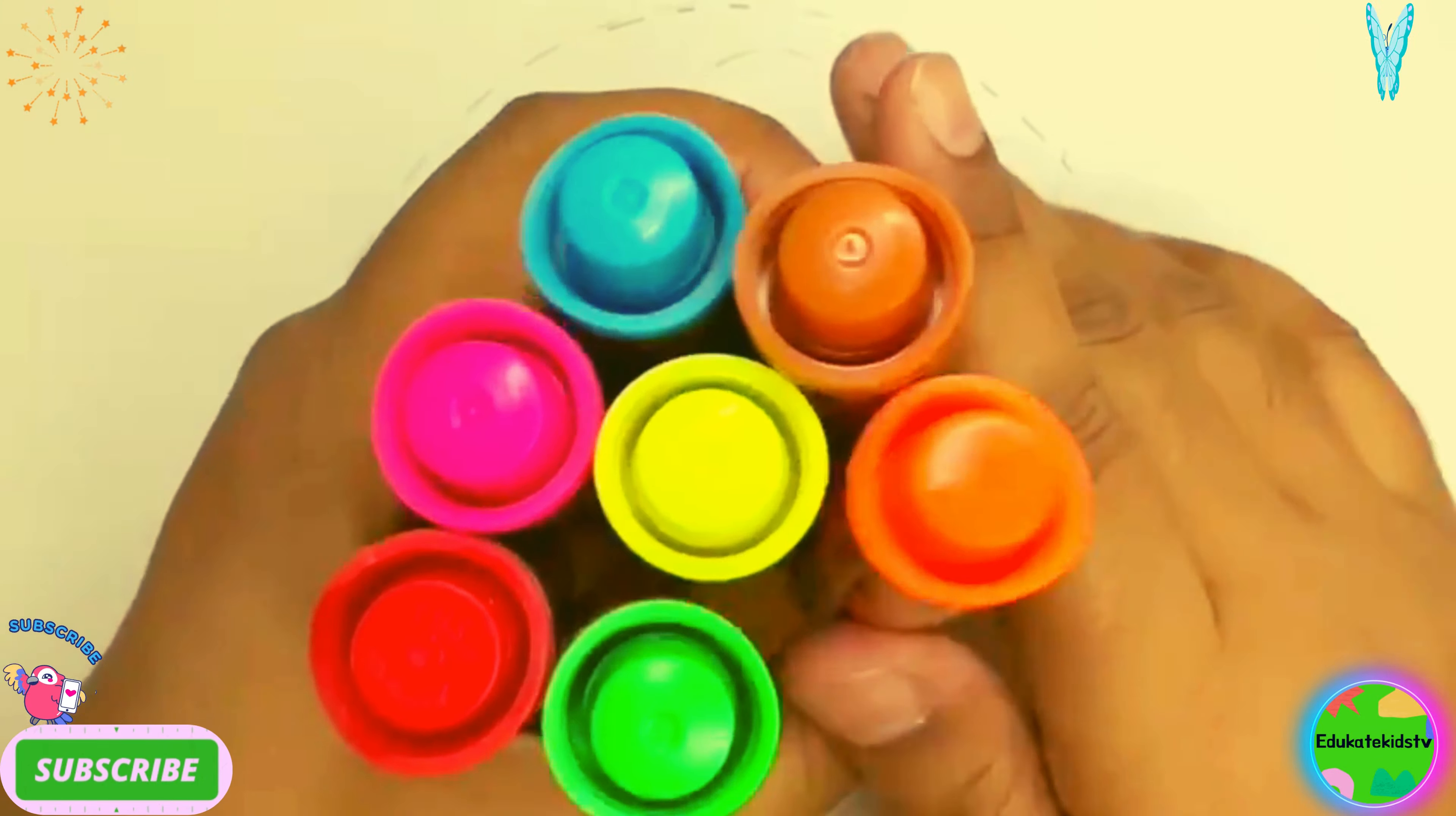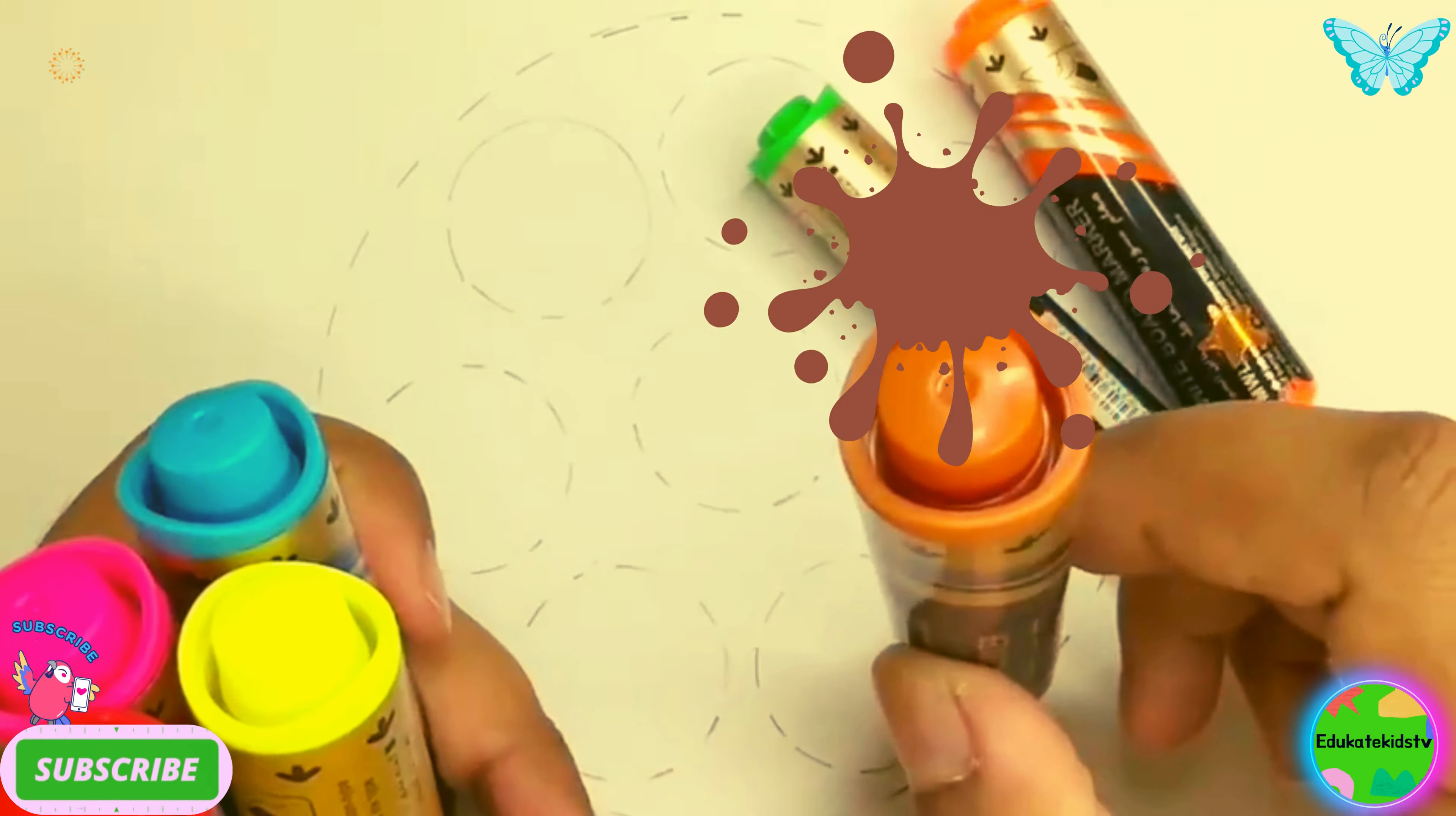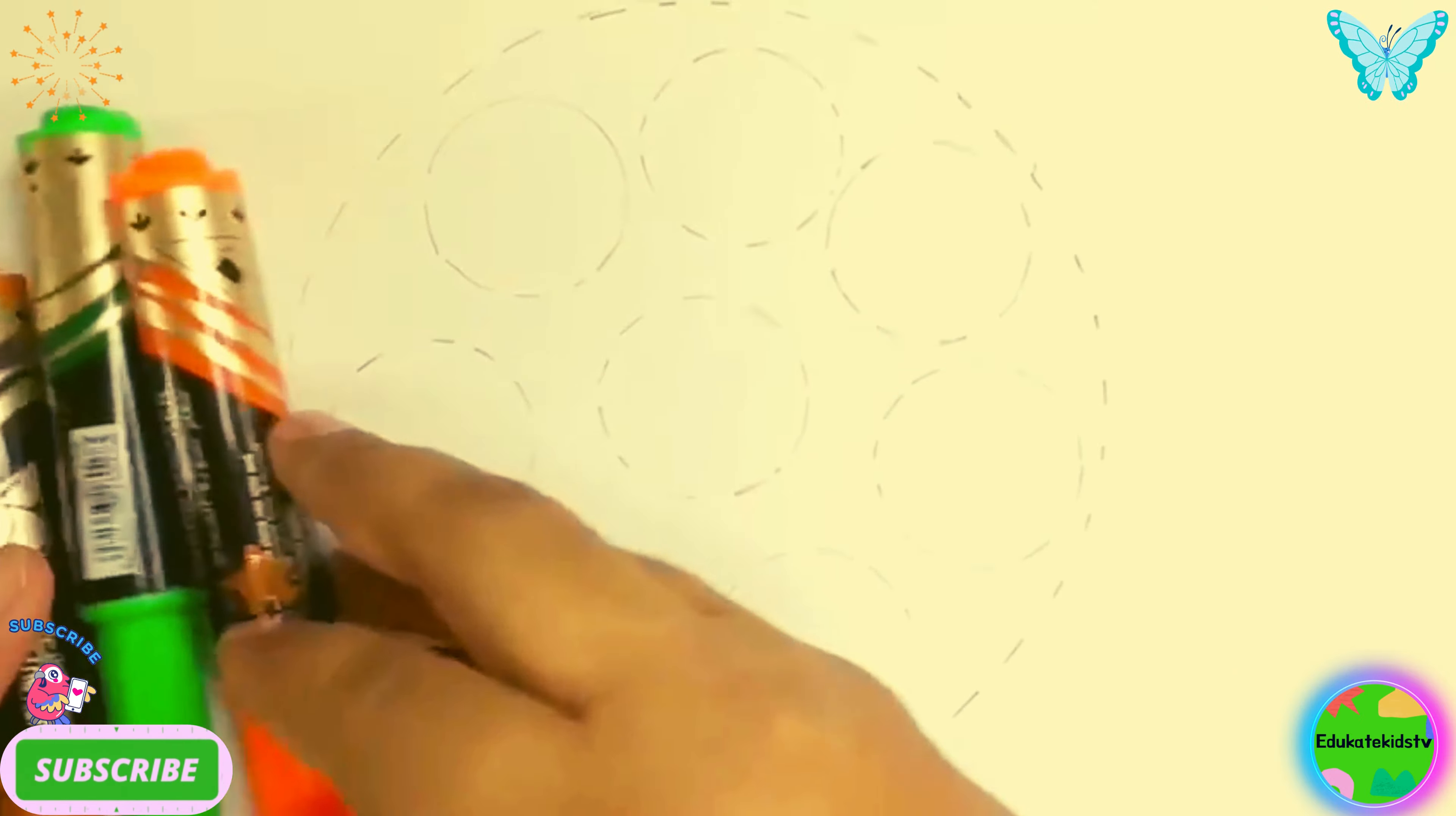Hello kids, how are you all? Good! What do we have here? They are colors, so let's learn. Orange color, green color, brown color, blue color, yellow color, pink color, and red color. What do we have here?